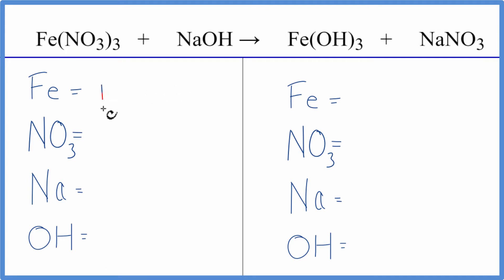We have one iron. We have this nitrate here, and we're going to count it as one thing. We have one nitrate and then times three, so we have three of these nitrates.